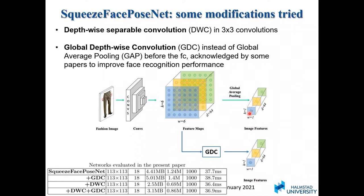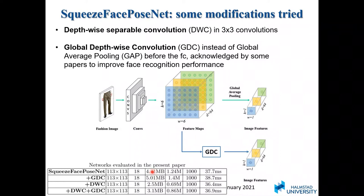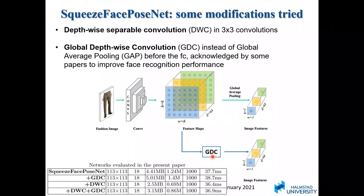In global depthwise convolution, instead of averaging, we train a convolutional filter for each channel. In this example, we train 64 filters of 6×6, which generate the flattened vector. Incorporating these filters increases model size and parameters slightly, but the motivation — as argued in other papers — is that face regions in these channels should not be simply averaged but weighted differently to enable more accurate face recognition. We wanted to test this step as well.